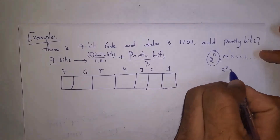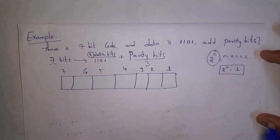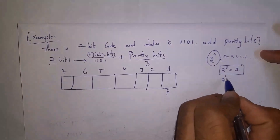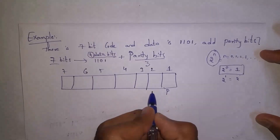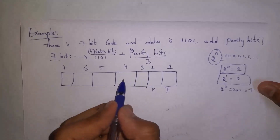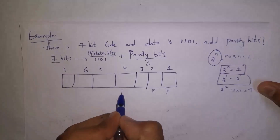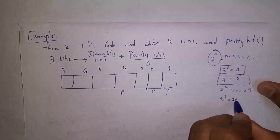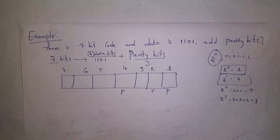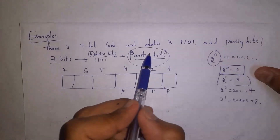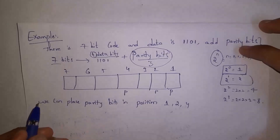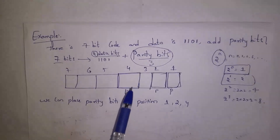The parity bits are placed at positions 1, 2, and 4 (P1, P2, P4). Position 8 (2^3) is not available since there are only 7 bits total, so we stop at 3 parity bits. The data bits 1, 1, 0, 1 are placed in the remaining positions: 3, 5, 6, and 7.